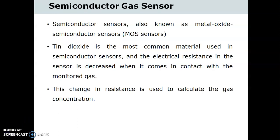Since the 1990s, the MOS sensors have become important environmental gas detectors. The semiconductor sensors are also known as metal oxide semiconductor sensor, that is MOS sensor. It detects gas by a chemical reaction that takes place when the gas comes in direct contact with the sensor.